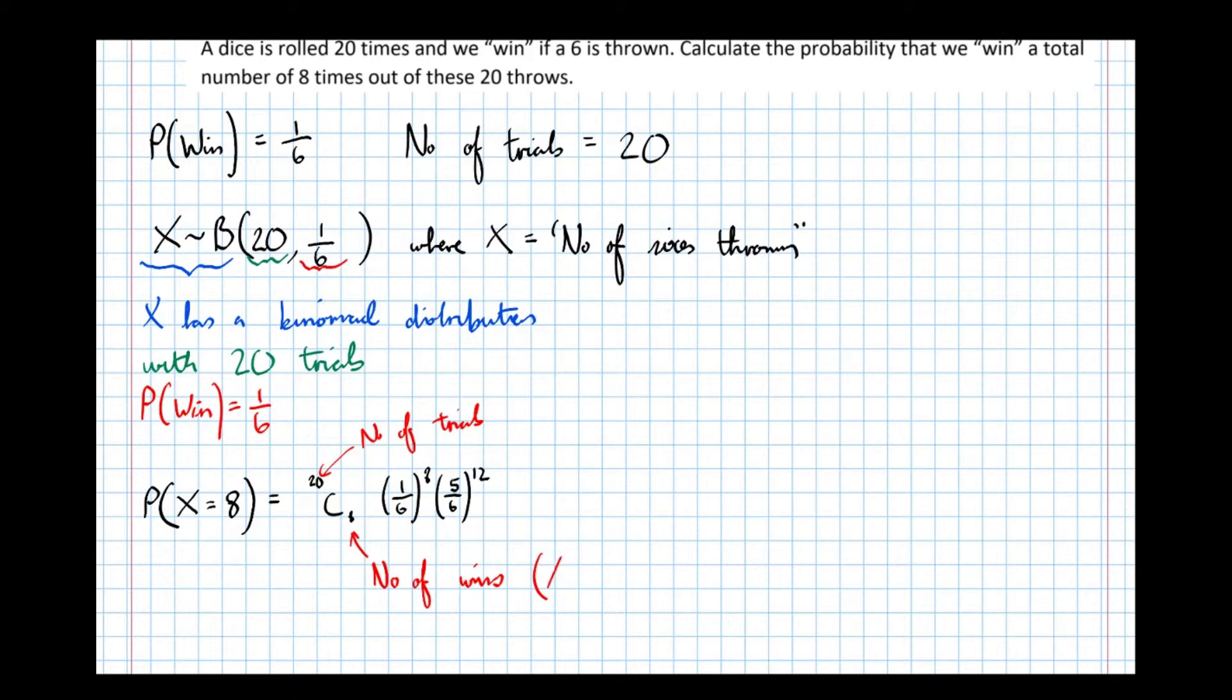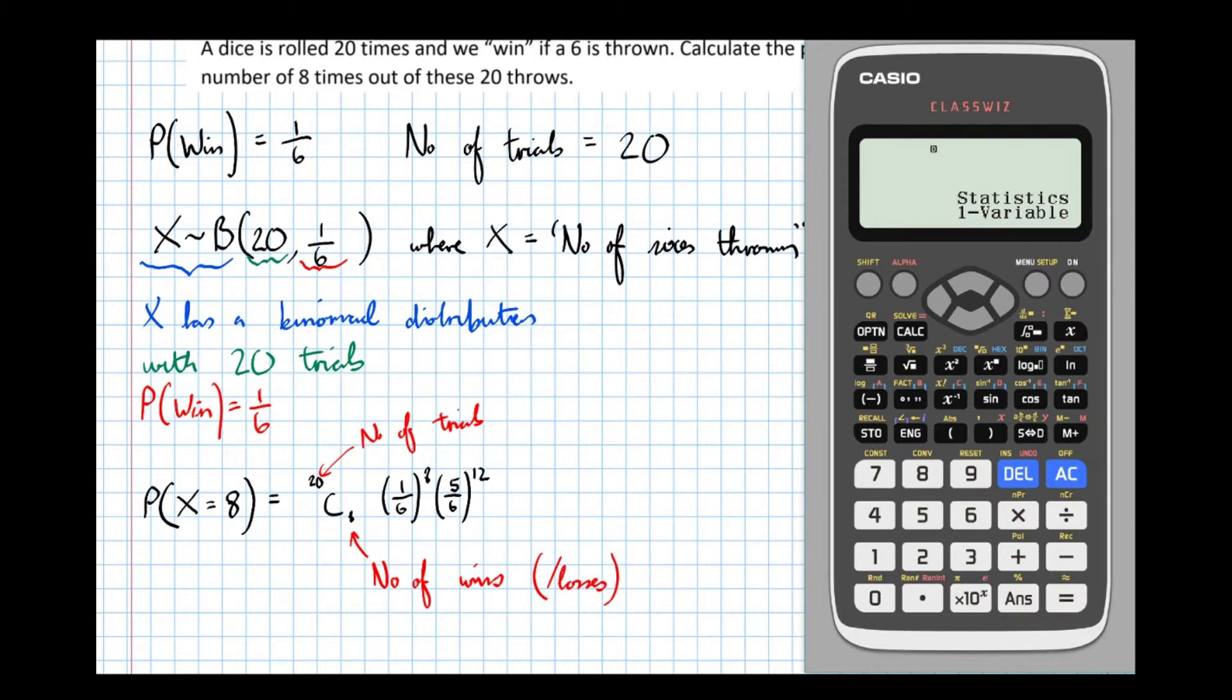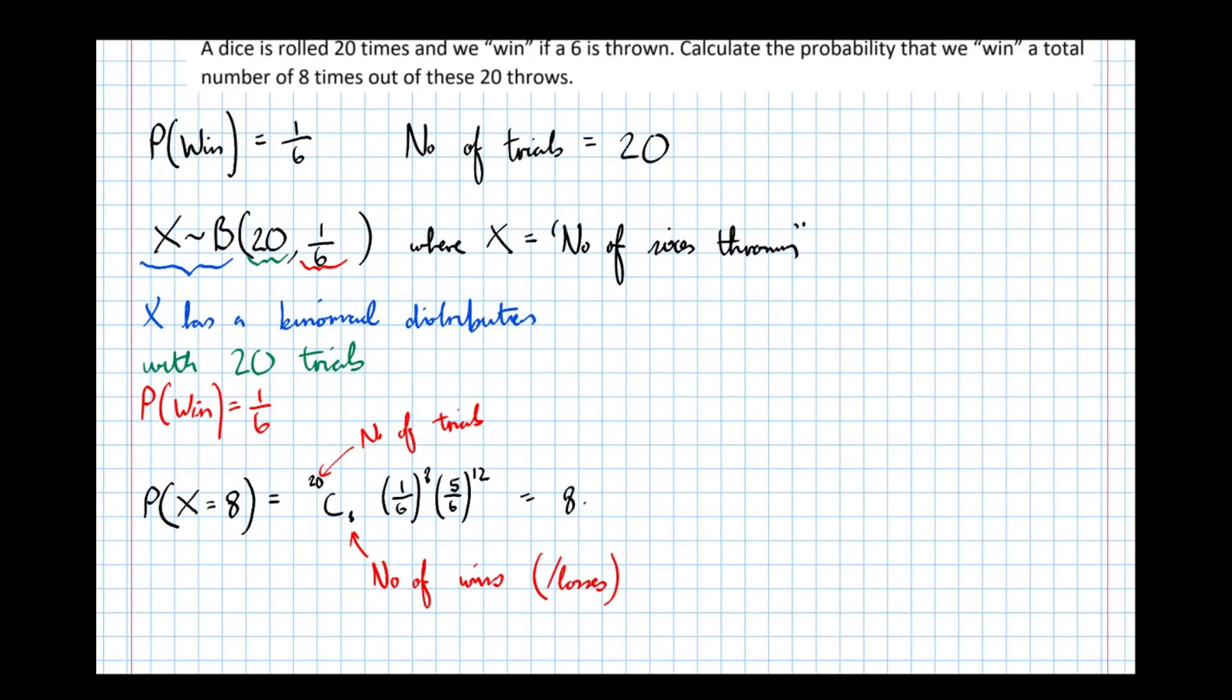As a small technical point, actually, if you put the number of losses instead, 12 in this case, you get the same answer because the combination function is symmetrical. So let's put that into a calculator. We've got 20, and the C button is above the divide sign. 20, C, 8, times 1 sixth to the power of 8, times 5 sixths to the power of 12. And that gives us the answer, which is 8.41 times 10 to the negative 3.